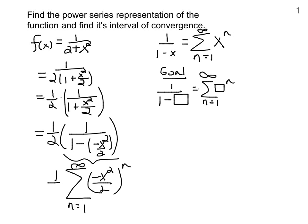There's still the one half on the outside. We take the summation and break it into parts: we have the alternating sign, we have x squared raised to the nth power which is x to the 2n, and in the denominator we have 2 to the n.